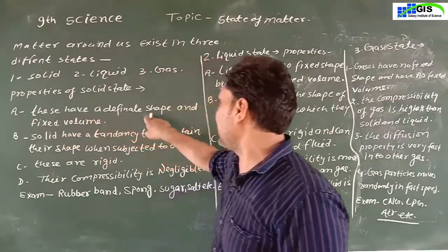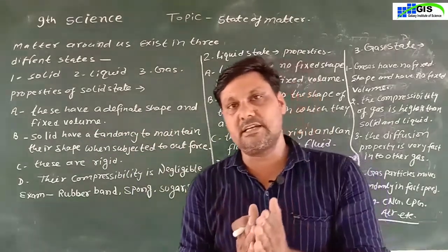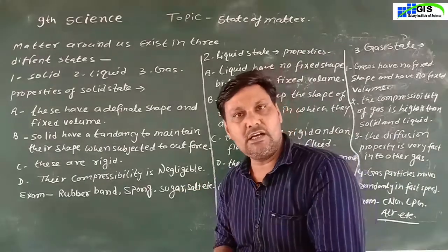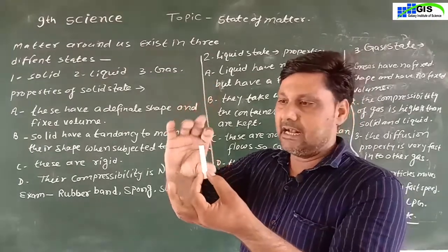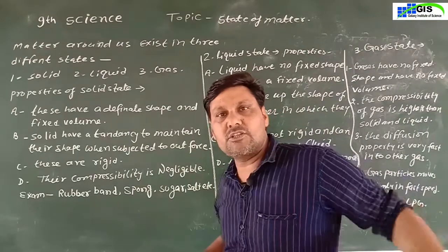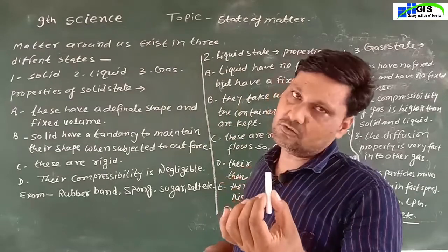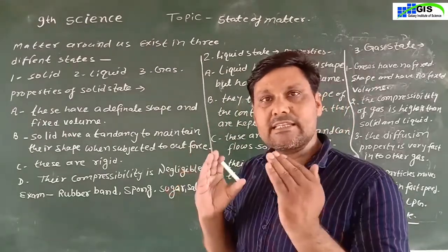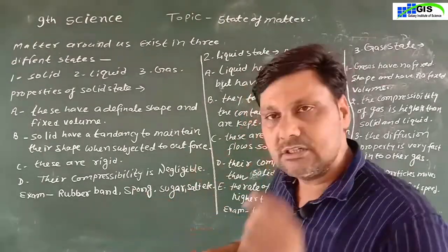اس کی first property یہ ہے کہ these have a definite shape and fixed volume. Solid state میں جو matter ہوتا ہے اس کی ایک fixed shape ہوتی ہے اور fixed volume ہوتا ہے۔ جیسے یہ chalk ہے اس کی definite shape ہے۔ اگر اس chalk کی shape کو ایک بار دیکھ لیا تو پیچھے سے بھی اندازہ لگا سکتے ہیں۔ اس کا volume بھی change نہیں ہوتا اور اس کی shape بھی change نہیں ہوتی ہے۔